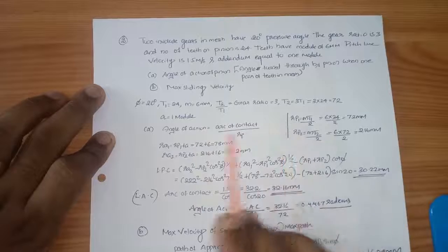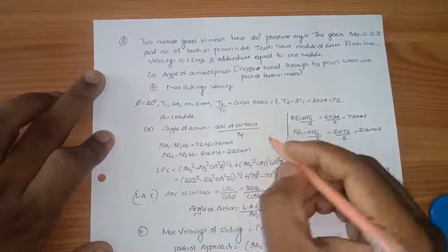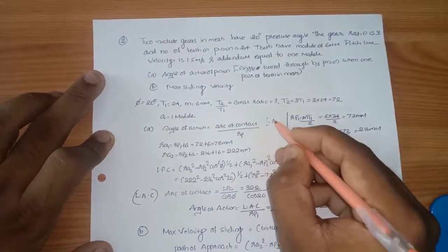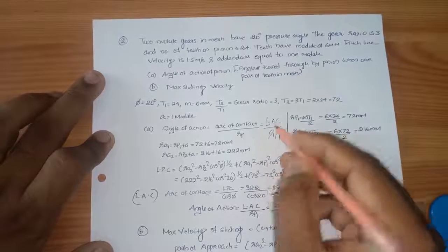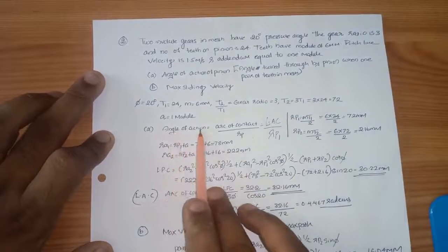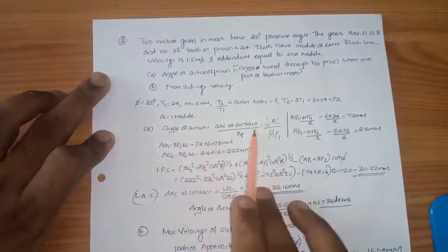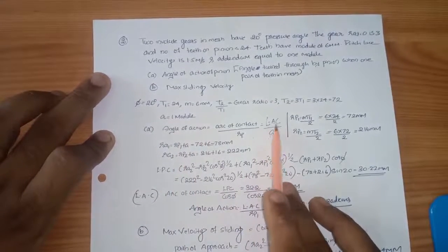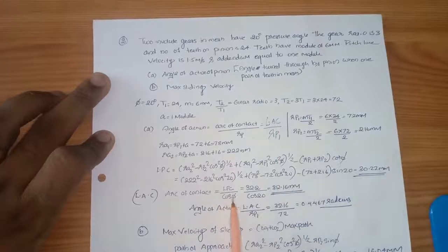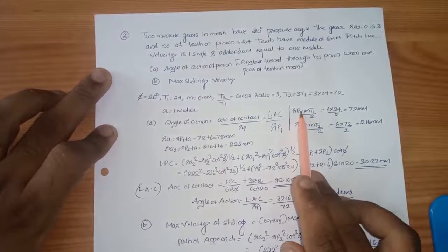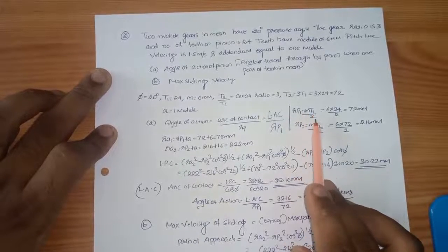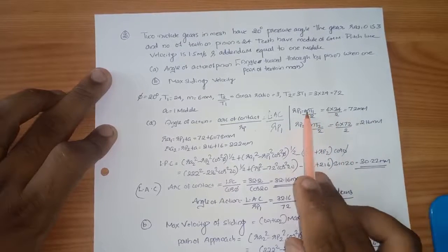First angle of action. Length of arc of contact divided by rp. LAC by rp. Angle of action. LAC by cos phi. LPC by cos phi. LPC by rp. Rp1 is T1 by 2.